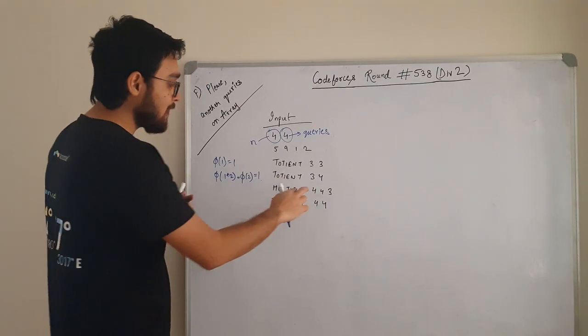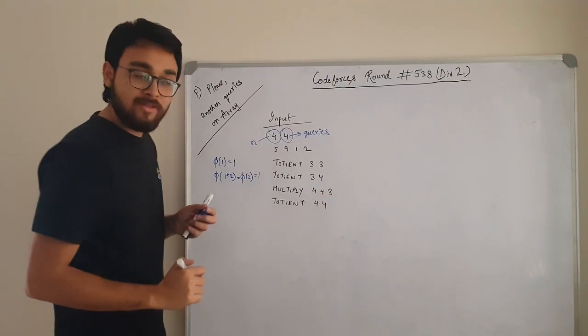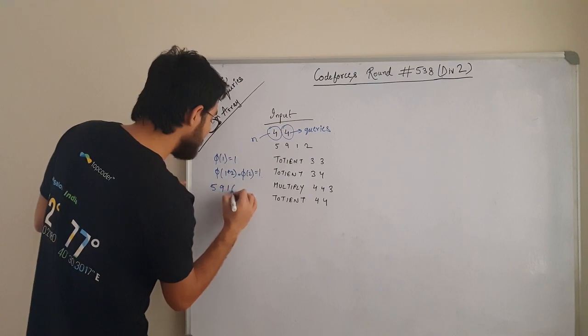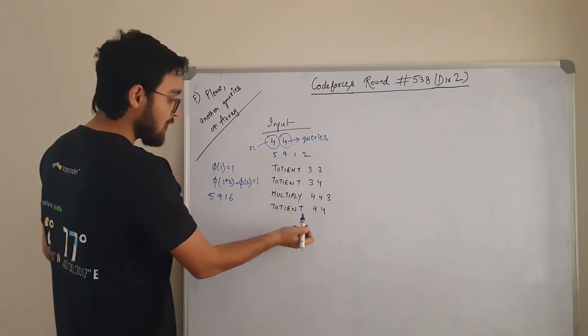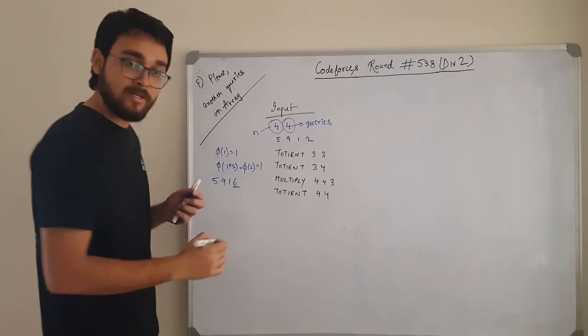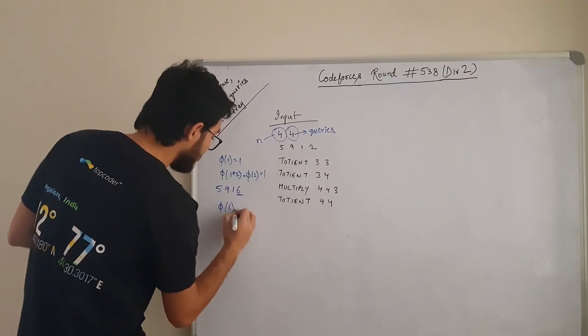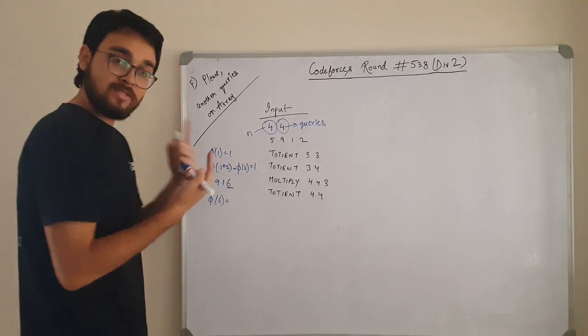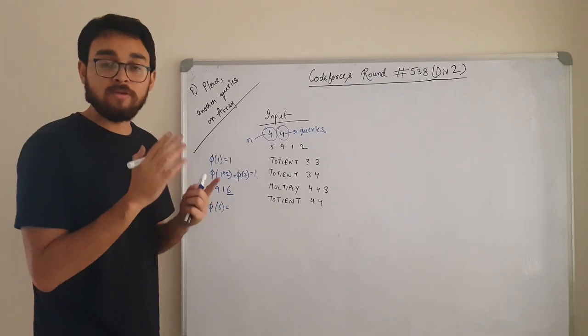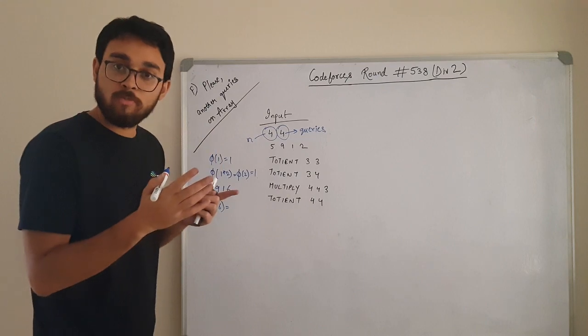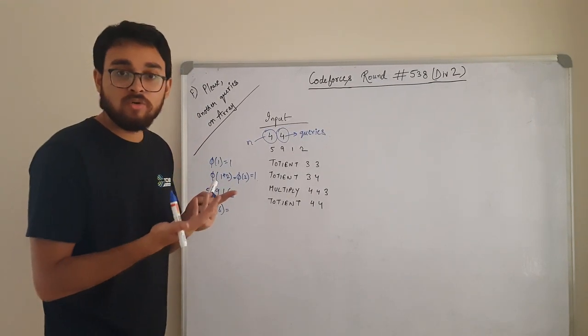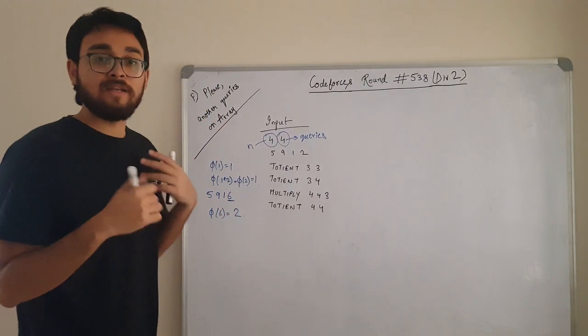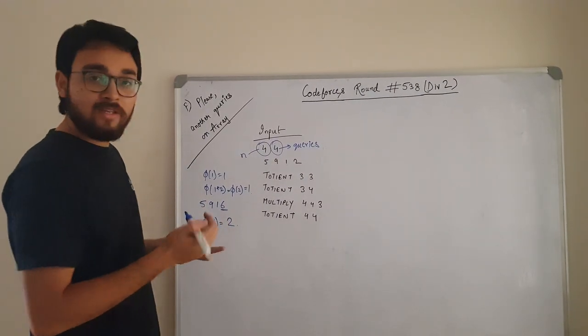Now, the next query is multiply 4 to 4 by 3. We multiply this element with 3. So how the array will change? It will become 5, 9, 1, 6. Now, the next query asks us to return the torsion of this element. What is going to be the φ of 6? How many elements are relatively coprime from 1 to 6? 1 is coprime. 2 is not coprime, gcd of 2 and 6 is 2. 3 is also not coprime. 4 is also not coprime, gcd of 4 and 6 is 2. 5 is coprime. So now we have 2. 6 is not coprime. We have 2 numbers which are relatively coprime. This is what they want us to do.